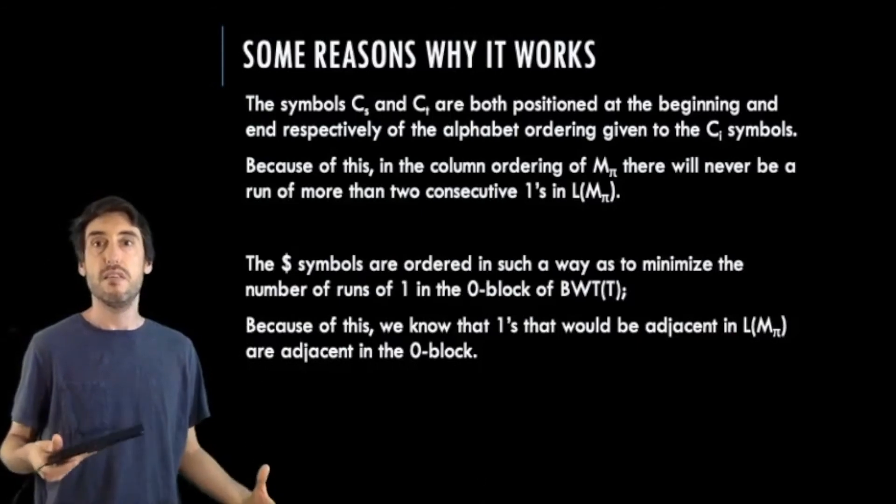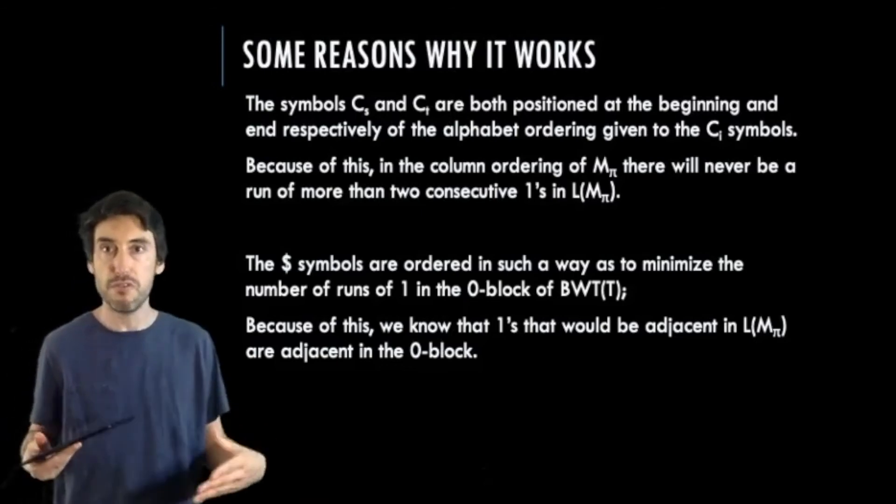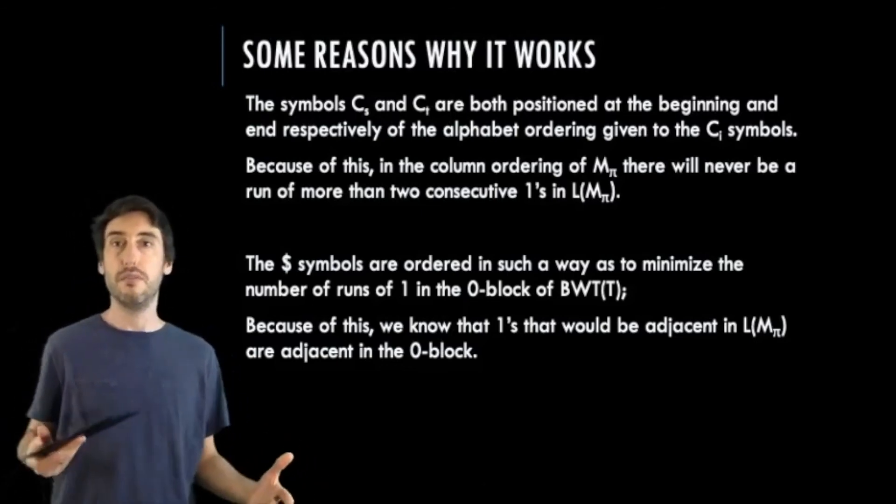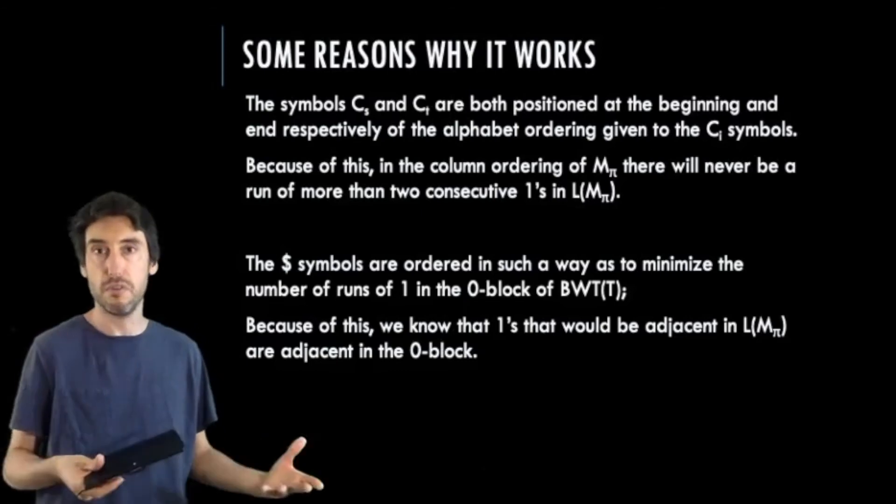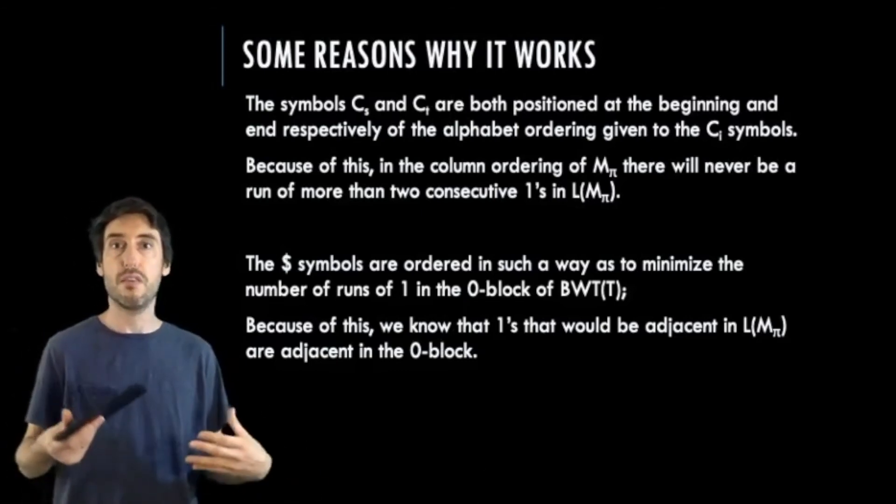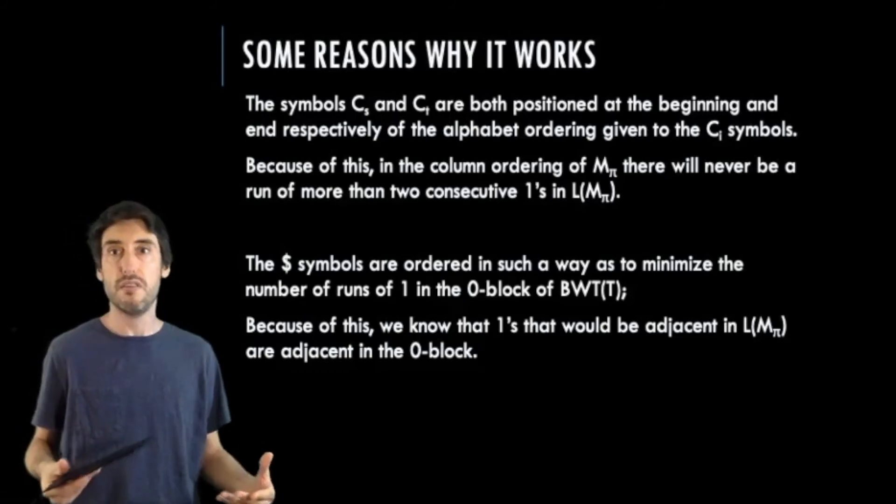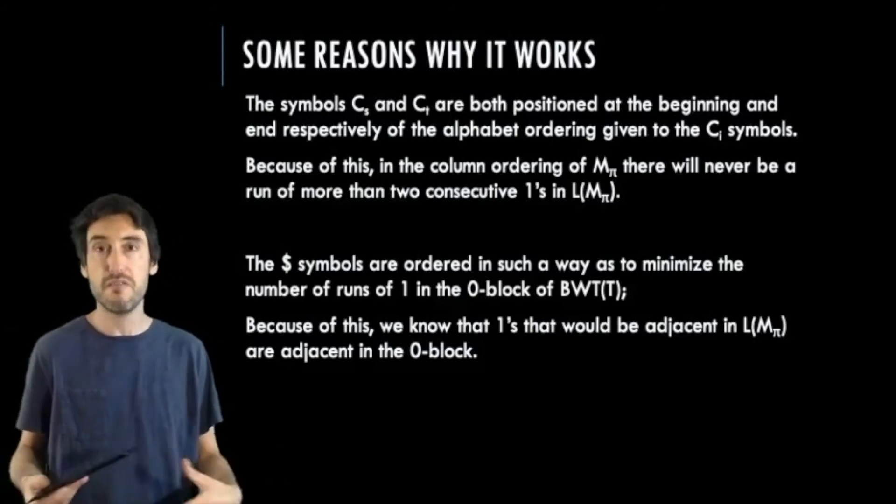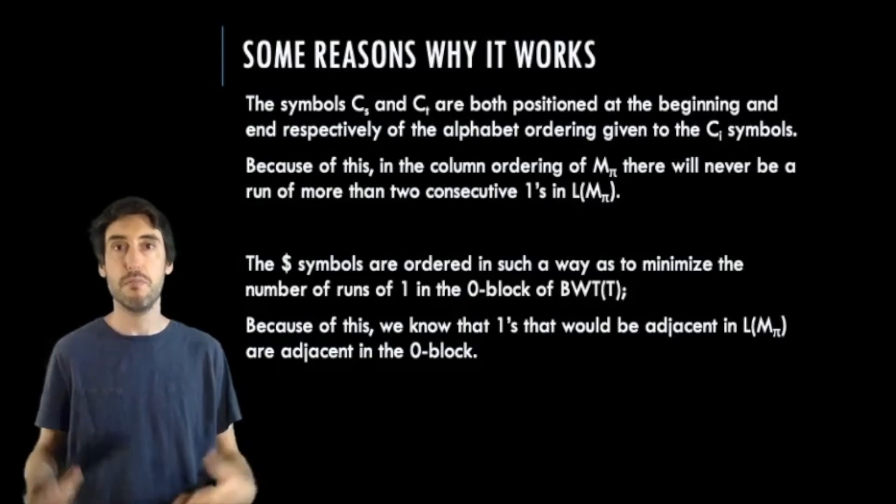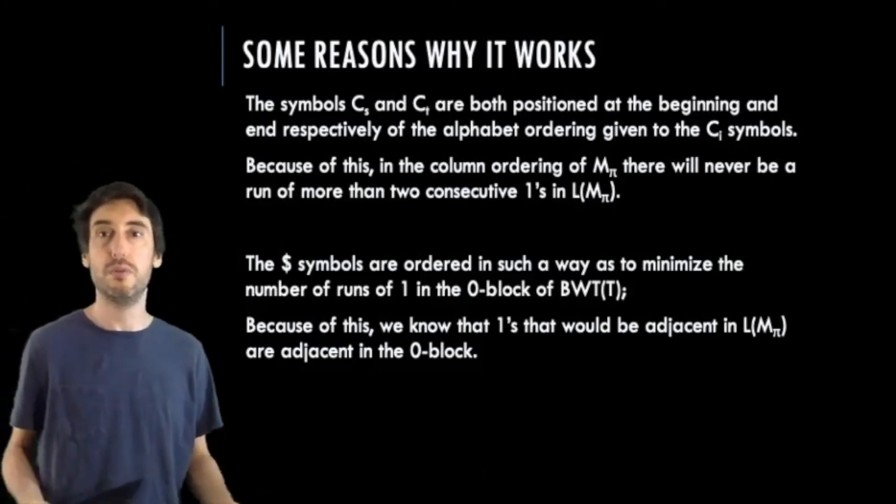Second, the individual dollar symbols on each of these substrings allows for the substrings to arrange themselves optimally for a given ordering of the columns, the column symbols, like the symbol cj. This ensures that two ones that would be adjacent in the linearization of m will also be adjacent in the 0 block. So that's essentially it. Many of the details were left out, and you need those details to prove that these ideas can be used to make an L reduction, but hopefully I was able to convey a little bit of intuition as to why it works.